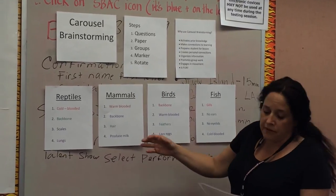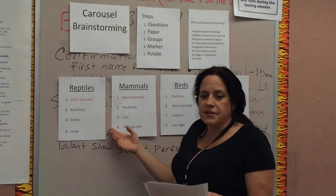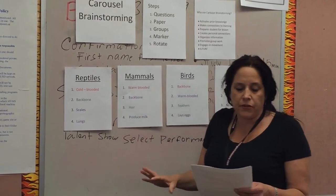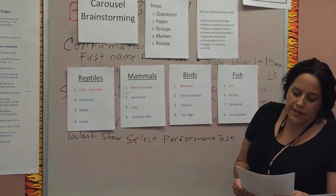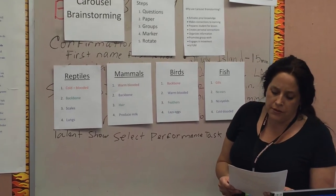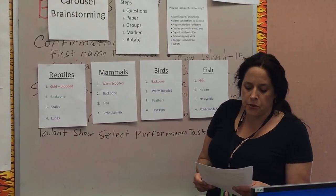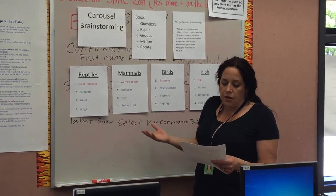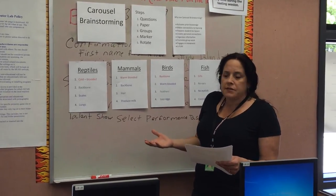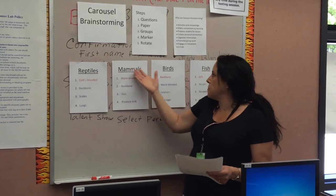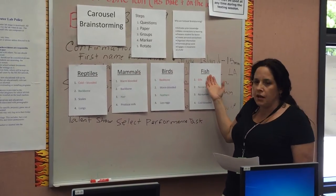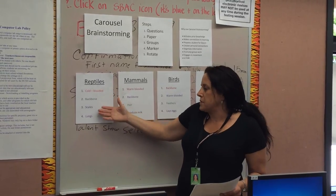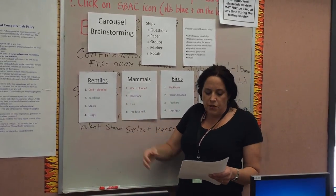Here is an example of Carousel Brainstorming as a way to summarize subcategories within a main idea. It's a third grade lesson where the topic is animals and the subcategories are mammals, reptiles, birds, and fish. The teacher would write a question — list the characteristics of each — for reptiles, mammals, birds, and fish. As you can see, this represents the different colored markers that students would be using.